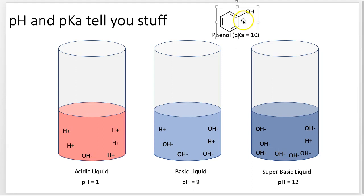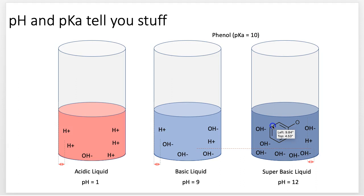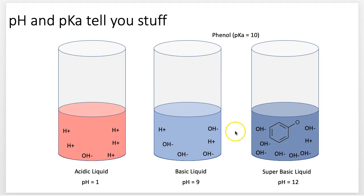Now if we take phenol and put it into a really basic liquid — it's blue, so it's basic — and drag it down there, it gives up its proton. It lost that hydrogen because it was put into a really basic liquid. The pKa of the phenol is more acidic than the pH — the pH is 12, relatively basic, and this pKa is more acidic than that. Therefore, it gives up its hydrogen.